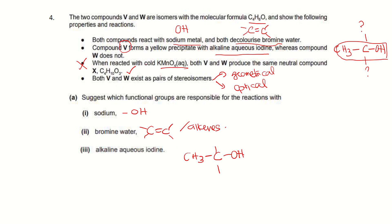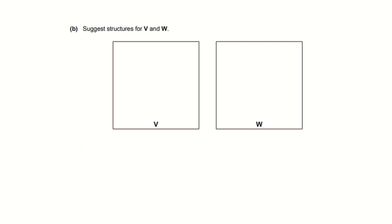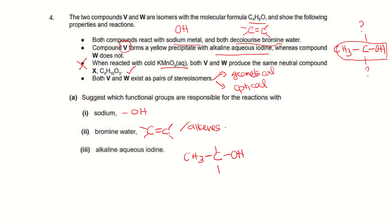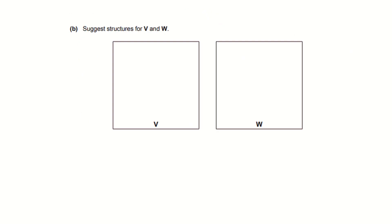Part A: the functional group responsible for the reaction with sodium metal is OH. For bromine water, it is the alkene group (C=C). For alkaline aqueous iodine, it is a methyl group attached to a carbon bearing OH — draw this fragment to show the structural requirement.